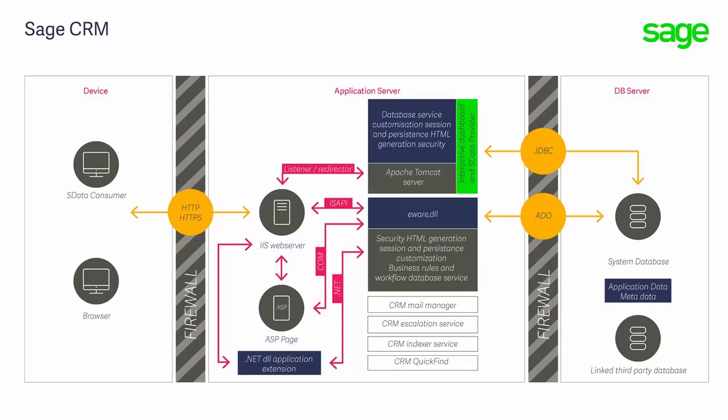As existing features in Sage CRM are refreshed or new features are added, these will be included within the Tomcat side of the architecture. APIs such as sdata and the Ajax features of the client-side API are all based on Java technology. As Sage CRM evolves over the next few versions, the Java technology will become more and more important and will eventually be free to fully use 64-bit technology and all the richness that the new underlying technology can provide.